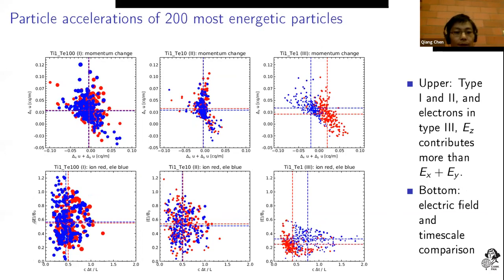For these efficient cases, the magnitude of the electric field seems to contribute more. For this inefficient case like type three, you notice the electrons need a very long time scale.